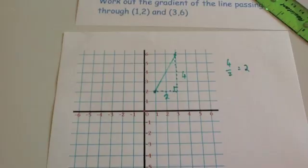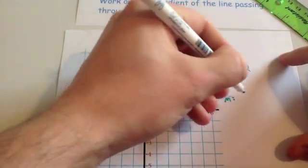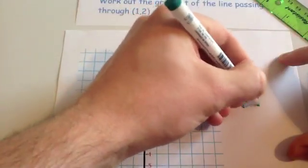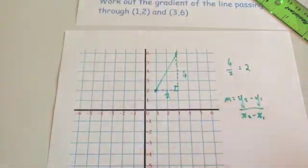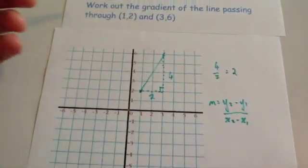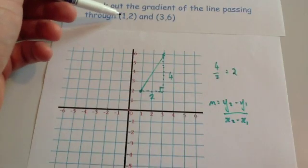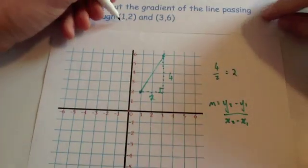So that's one way to do it. The alternative method is to use m equals y2 minus y1 over x2 minus x1. So to use that, the first thing I would do is look at your two coordinates, see which one comes first. So (1,2), well that would be before (3,6), so it's over to the left, and label them. So x1, y1, x2, y2.